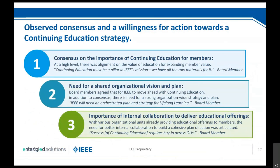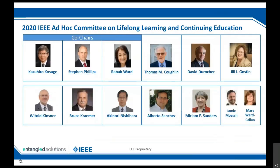At the end of this day-and-a-half activity, we achieved consensus. The first piece was that we wanted to focus on the importance of continuing education for our members. The second piece was recognizing that we need a shared organizational vision and plan — it's not going to be done by just one OU because education pervades all of IEEE. Internal collaboration is going to be really important for delivering the right content. The ad hoc co-chairs are myself as VP of EA, Kazuhiro as VP of TAB, and Rabab as a Division Director.